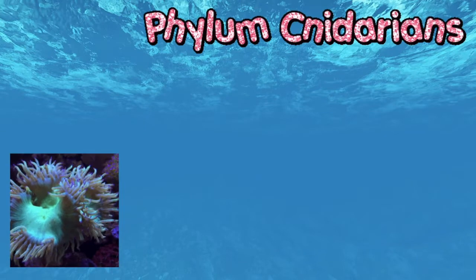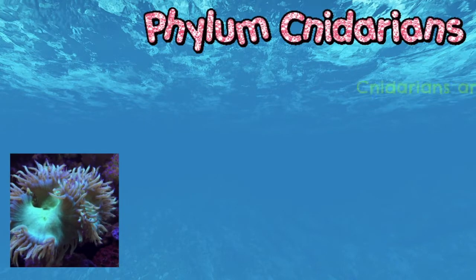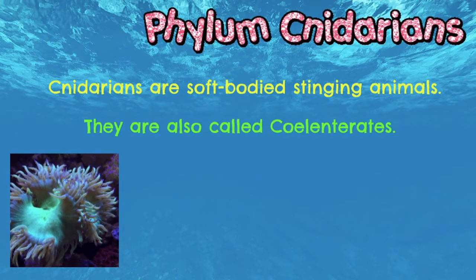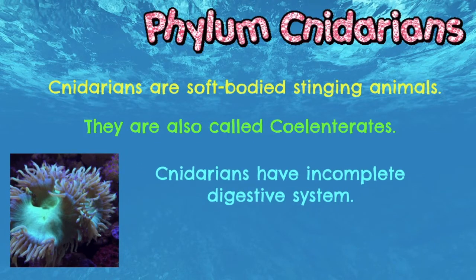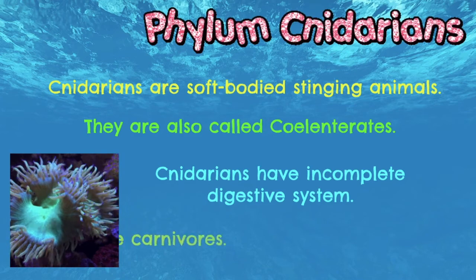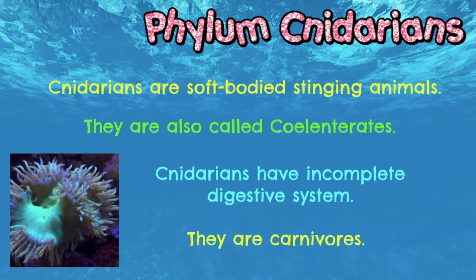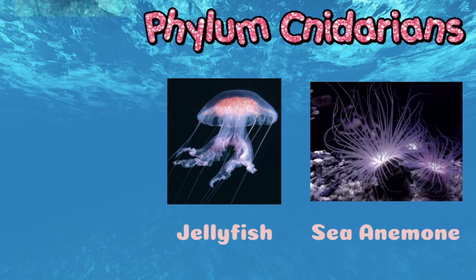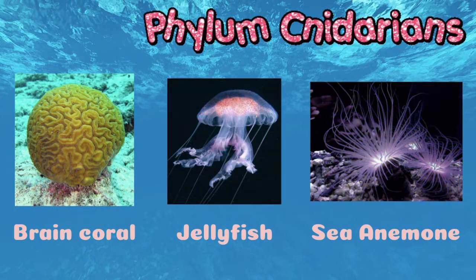The next group is phylum Cnidarians. Cnidarians are soft-bodied, stinging animals, also known as coelenterates. Cnidarians have an incomplete digestive system with only one opening — the gastrovascular cavity serves as both a mouth and an anus. Just like Porifera, cnidarians are also carnivores; they usually eat plankton and other small organisms in the water. Some examples are jellyfish, sea anemone, and brain coral.